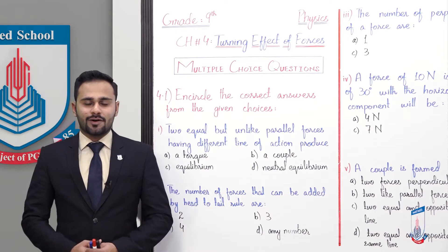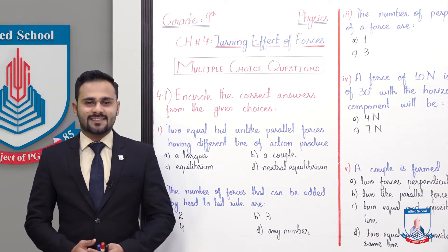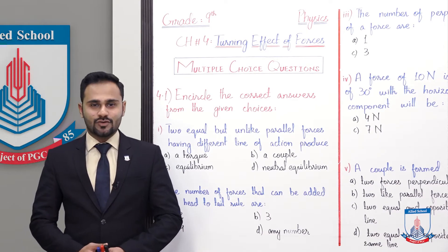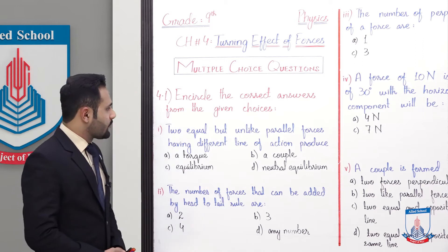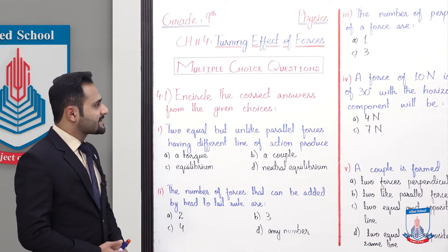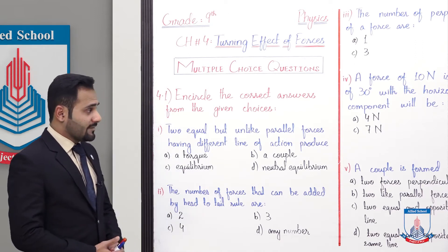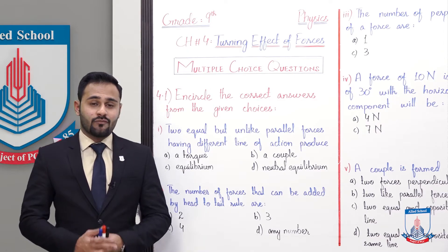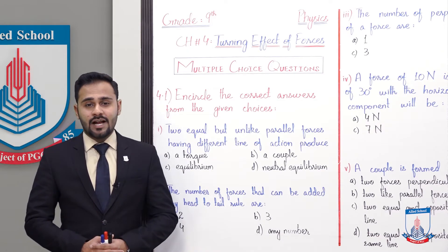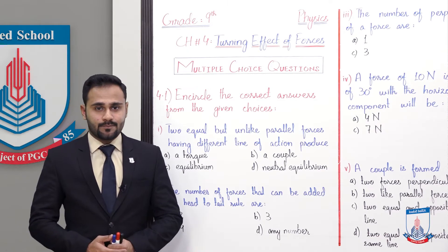Chapter number 4: Turning Effect of Forces — the exercise multiple choice questions. Section 4.1 asks you to encircle the correct answers from the given choices. You have four options for each MCQ and you have to choose the correct one.